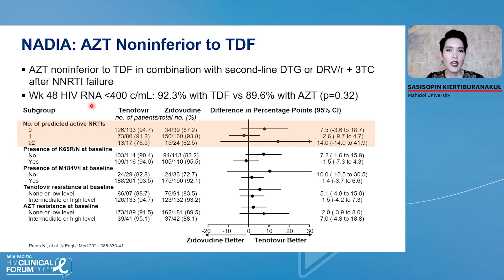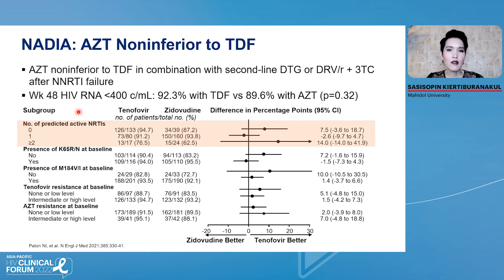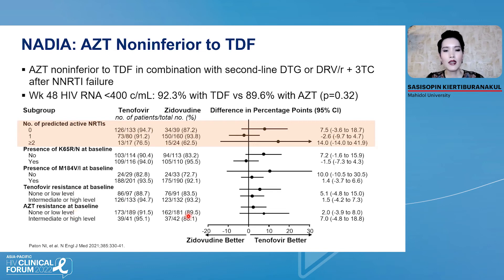The other result of the NADIA study showed that AZT is non-inferior to TDF in combination with dolutegravir or darunavir/ritonavir plus 3TC after NRTI treatment failure. The proportion of patients with HIV RNA less than 400 copies at week 48 was 92.3% with TDF versus 98.6% with AZT. There was no statistically significant difference, and also no significant difference by subgroup analysis — including number of predicted active NRTIs, presence of K65R or M184V, tenofovir resistance at baseline, and AZT resistance at baseline. But we need to wait for longer follow-up.